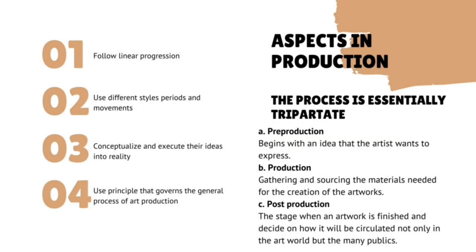The aspects in production divide the process into three parts. Artists follow linear progression, use different styles, periods, and movements, conceptualize and execute their ideas into reality, and use principles that govern the general process of art production. The process is essentially tripartite: Pre-production begins with an idea the artist wants to express; Production involves gathering and sourcing the materials needed for creating the artwork; and Post-production is the stage when an artwork is finished and decisions are made on how it will be circulated in the art world and to the many publics.